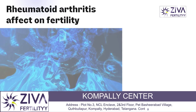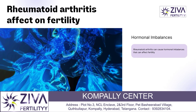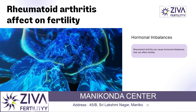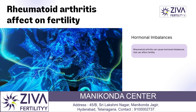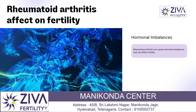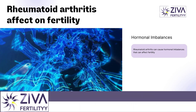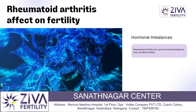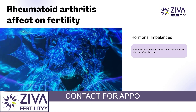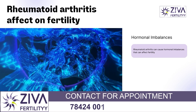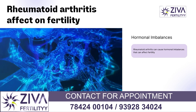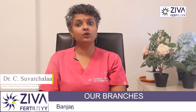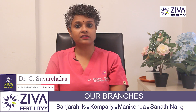Let's talk about a few. Hormonal imbalance. Rheumatoid arthritis can cause hormonal imbalances that can affect fertility. The chronic inflammation associated with RA, rheumatoid arthritis, can disrupt the normal functioning of the hypothalamic-pituitary-gonadal axis.